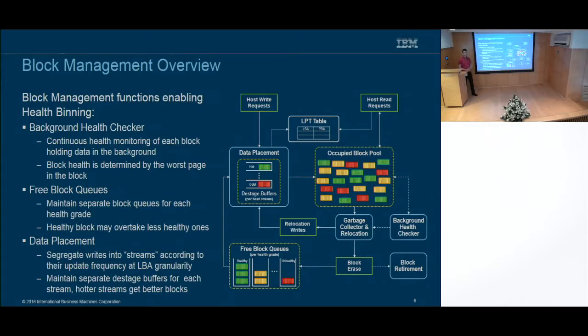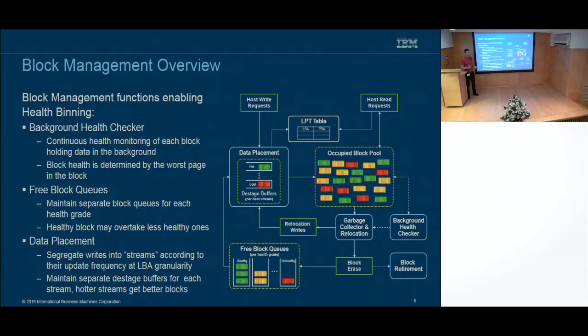This slide gives an overview of how we do block management. At the beginning, all blocks are in the free block pool, and the data placement unit takes blocks out of the free block pool — healthy blocks for hot data and unhealthy blocks for cold data respectively. Once a block is completely filled up it's placed into the occupied block pool. While a block is in the occupied block pool, a background health checker job goes through all these blocks, finds out their worst-page raw bit error rate, builds the distribution, and then classifies blocks into health grades — healthy, less healthy, and so on down to unhealthy.